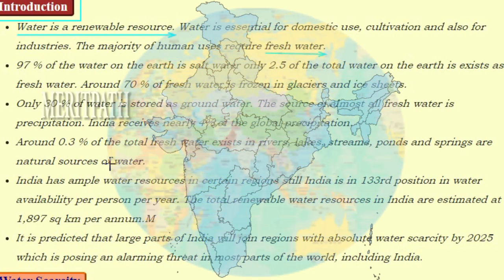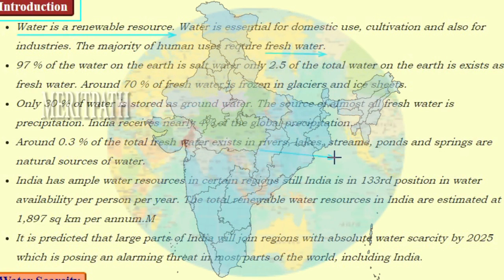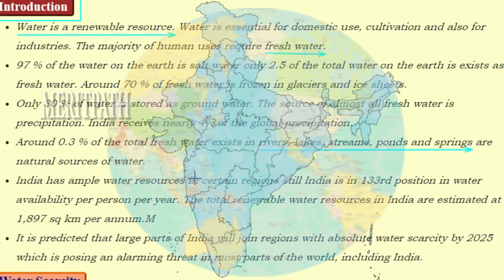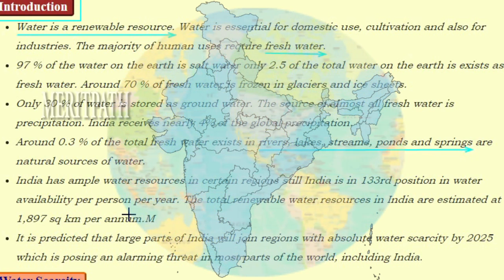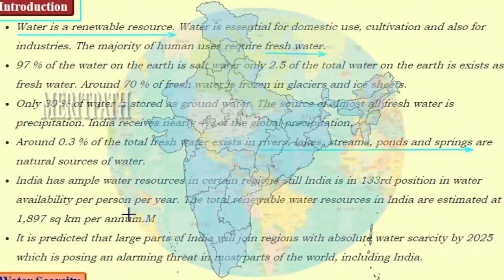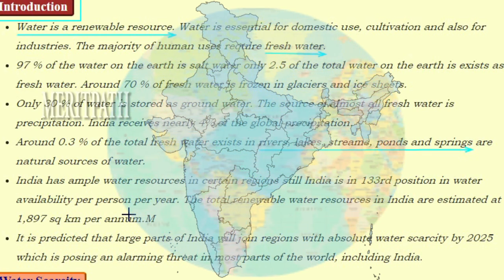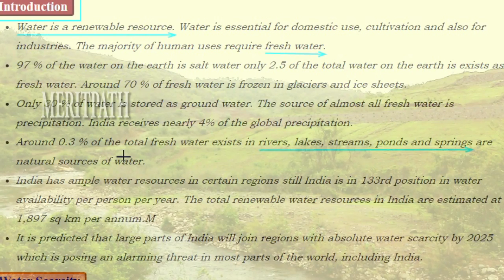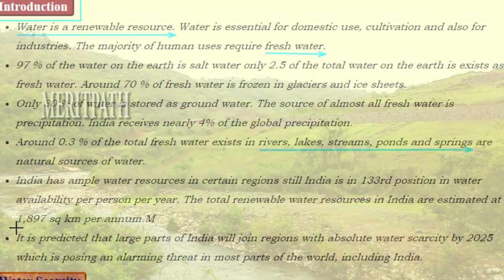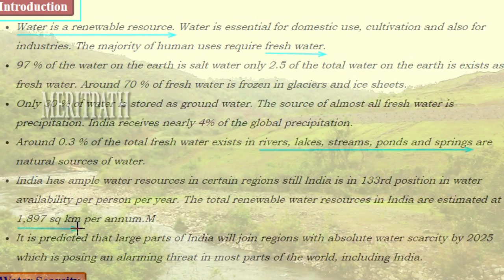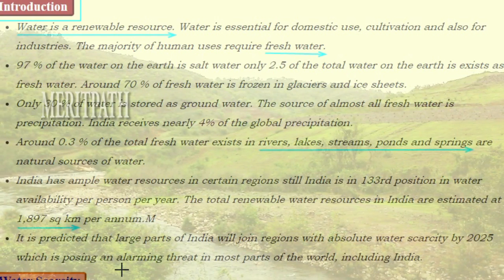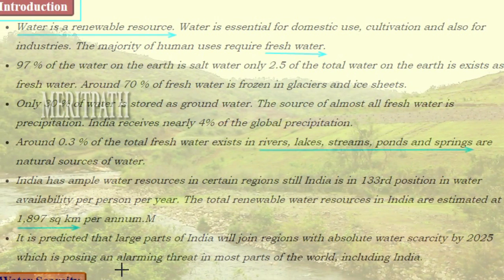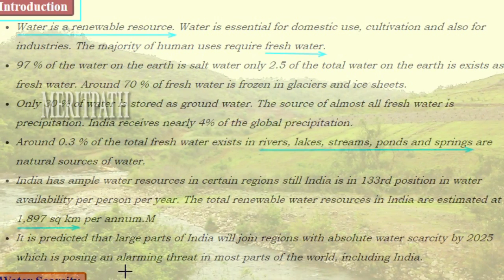Around 0.3% of total fresh water exists in rivers, lakes, streams, ponds, and springs, which are natural sources of water. India has ample water resources in certain regions, yet India is ranked 133rd in water availability per person per year. The total renewable water resource in India is estimated at 1,897 cubic kilometers per annum. It is predicted that large parts of India will join regions with absolute water scarcity by 2025, posing an alarming threat.